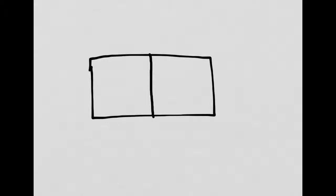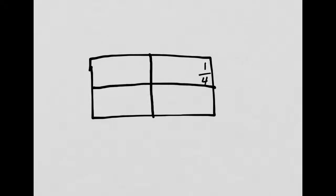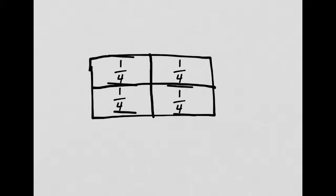We're not going to deal with really tiny pieces today. Let's cut it again. Now, how many pieces do I have? Let's count them: one, two, three, four. So what I'm dealing with now is fourths. And fourths have another name — they're also called quarters. Each one of these is one-fourth. Each part of my rectangle is one-fourth of the rectangle.